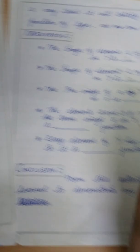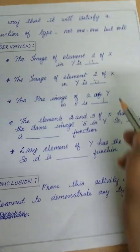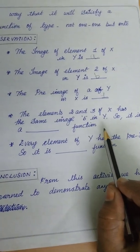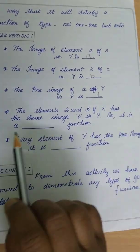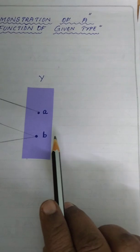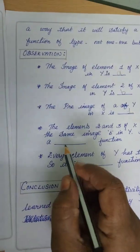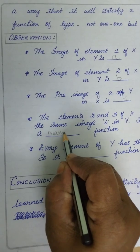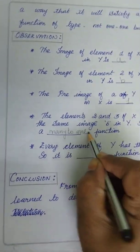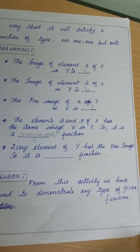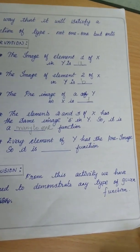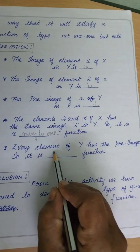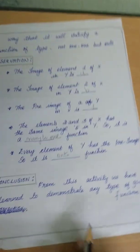The elements 2 and 3 of X have the same image b in Y. So it tells us that elements 2 and 3 both have the same image — so it is a many-to-one function. Then every element of Y has a pre-image, so it is an onto function. This is what we have observed from this activity.